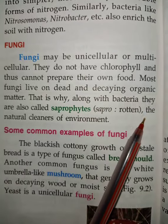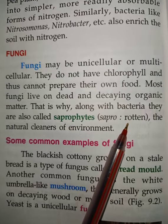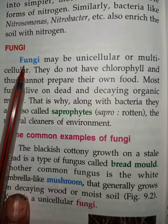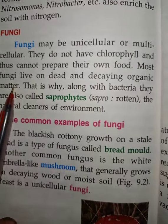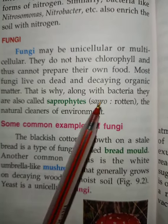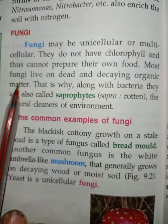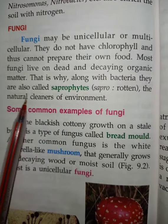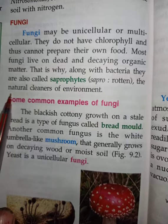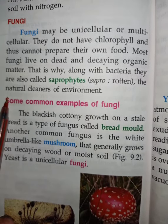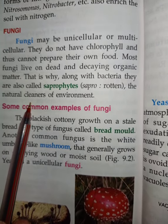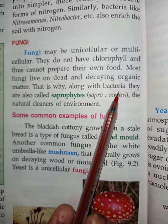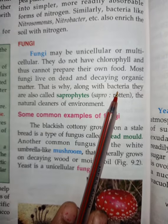Saprophytes means rotten — whatever dead organisms are present inside the soil, mushrooms or fungi feed on that dead and decaying organic matter. The definition of saprophytes: organisms which feed on dead and decaying organic matter are called saprophytes. Because they eat dead and decaying organic matter, they are also called natural cleaners of the environment — naturally, in wanting their food, they are cleaning their environment.